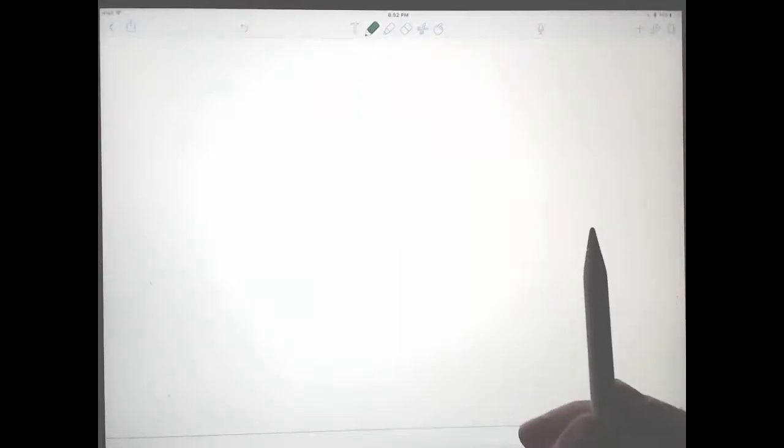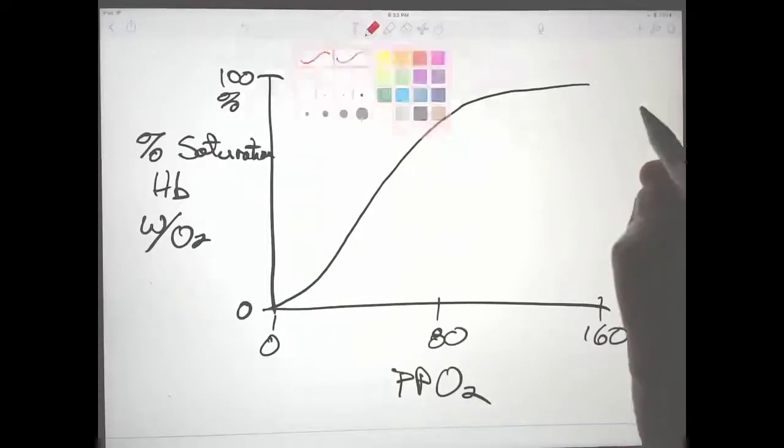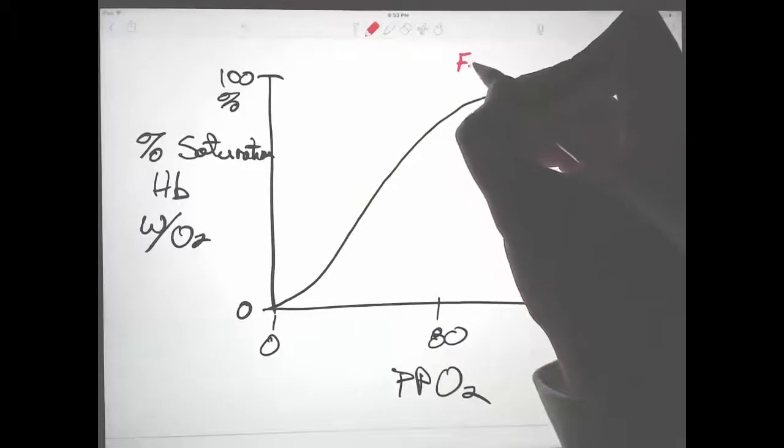Animals also adjust 2,3-DPG levels when they change elevation. So one of the adaptations to higher and lower elevation is to adjust 2,3-DPG levels. Finally, one last point I want to make is that different forms of hemoglobin can have different affinities for oxygen. Different animals actually have different affinities. The next one I want to talk about is fetal hemoglobin.